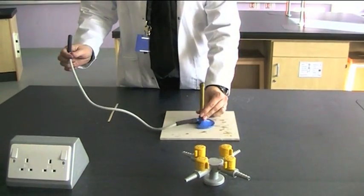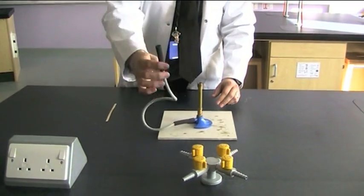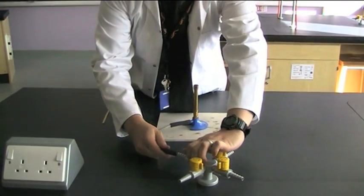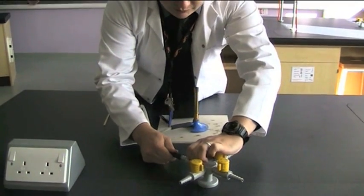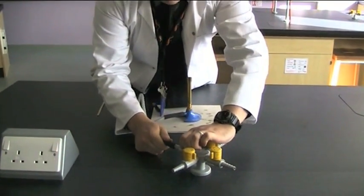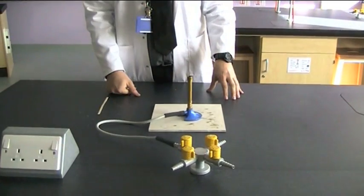What you next need to do is put your Bunsen burner on the heat proof mat. And you need to take this end and plug it onto a gas tap. Make sure you push it down as hard as you can so it's nice and sealed and no gas can leak out.